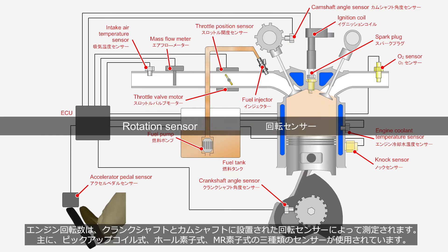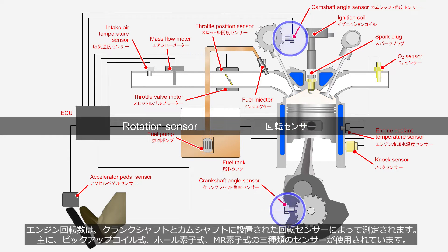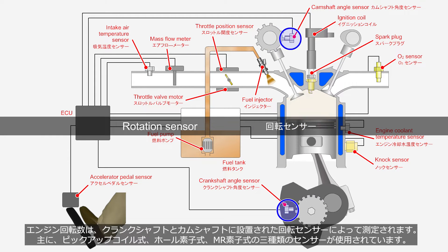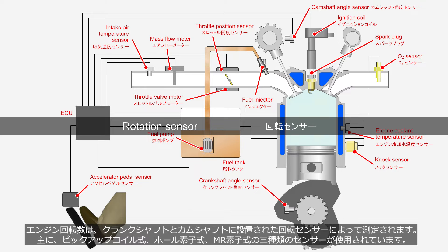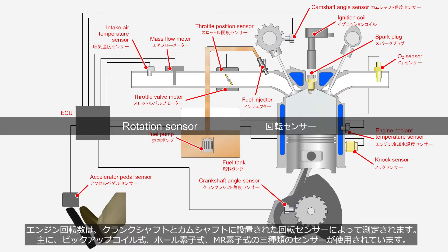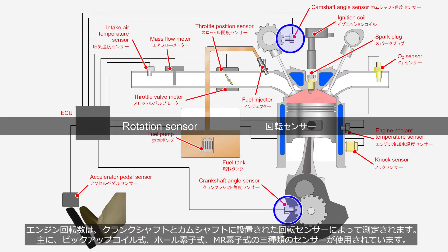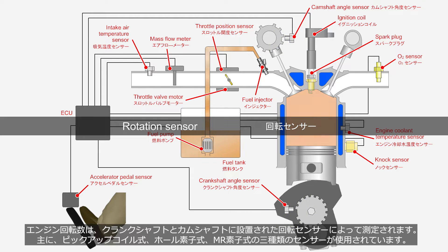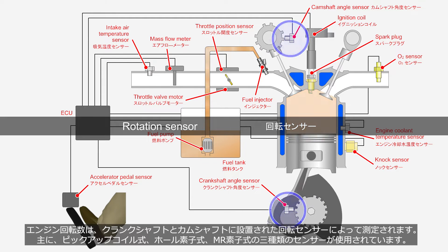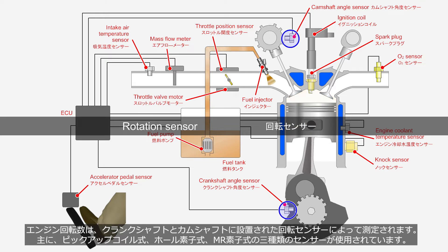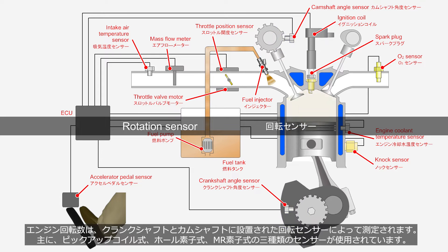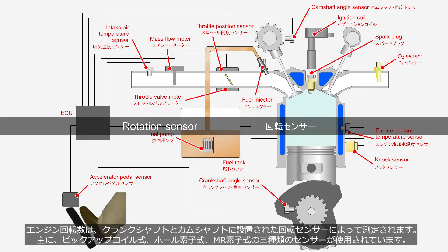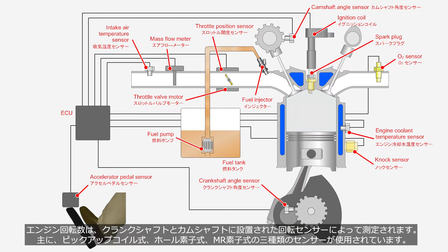The engine speed is measured by rotation sensors installed onto the crankshaft and camshaft. Three types of sensors are commonly used: the magnetic pickup type, the hall effect type, and the MR — magnetic resistance element — type.